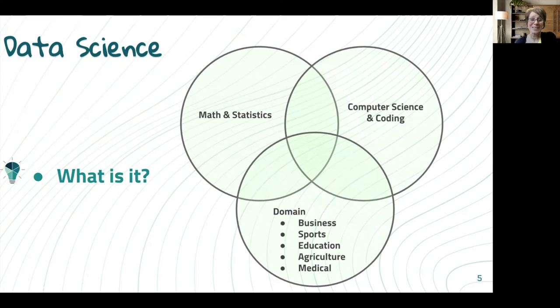And that domain could be business, it could be sports, if you're familiar with the movie Moneyball, then that was all about data science. It could be education, agriculture, medical. We're seeing a lot of data right now as well in the medical field with our COVID crisis. But the overlapping of those three areas is where we would find data science.